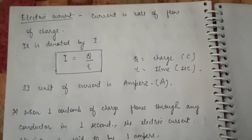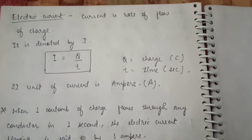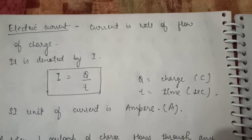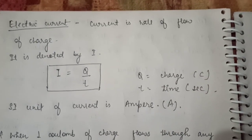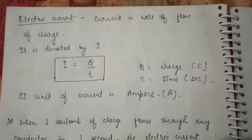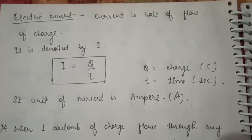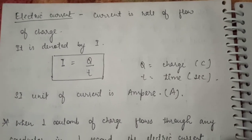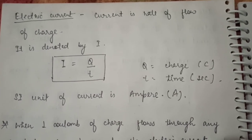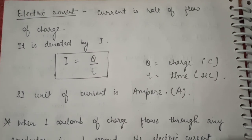If there is a potential difference and we connect two points with a wire, charge flows. This charge flow is called current. In simple terms, current is the rate of flow of charge. Current is represented by I, and the formula is I = Q/T, where Q is charge and T is time in seconds. Just as rate of change of displacement is velocity and rate of change of velocity is acceleration, similarly rate of flow of charge is current.